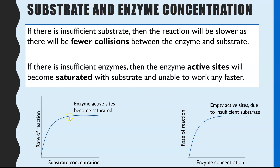We then see a plateau where increasing substrate concentration no longer increases the rate of reaction. That's because there is a new limiting factor: enzyme concentration. When you add more and more substrate, eventually all the active sites become fully saturated — every single active site is already in use — and therefore the reaction cannot occur any faster.